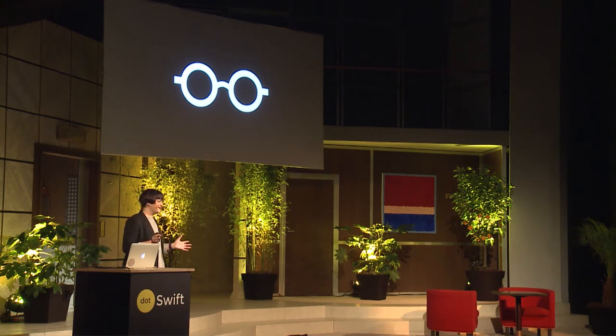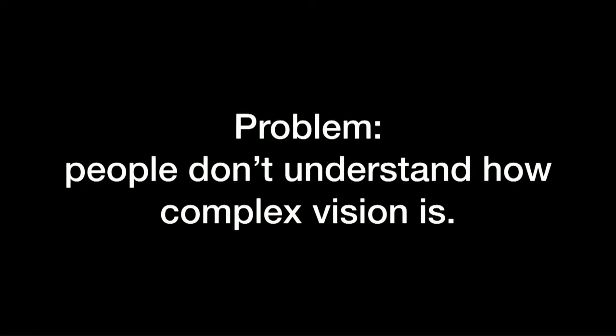I can't cover every single aspect of accessibility in 18 minutes, sadly. But I'm going to mostly focus on vision because iPhones, watches, Macs, and Apple TV are very visual devices. As a developer, if you don't really understand what the person's going through, it can be pretty confusing to know what you need to do. The problem I found was people don't understand how complex vision is. The more I researched different visual problems, I realized it's amazing that we can see at all, because there are some weird things that your eyes and brain can do.